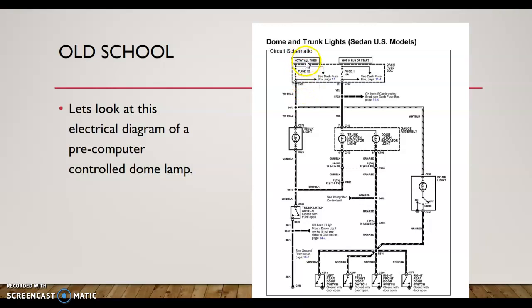This label here says 'hot at all times' — this tells you when this fuse gets power. This one gets it at all times. So as power comes through here, if I'm checking this pin, I would expect 12 volts. I need to know what's expected in order to know what's broken. I can't know what's faulty unless I know what's normal. I write it down on my schematic, and then when I go measure it, they should match. So I should expect 12 volts here, and it comes to a splice — still 12 volts.